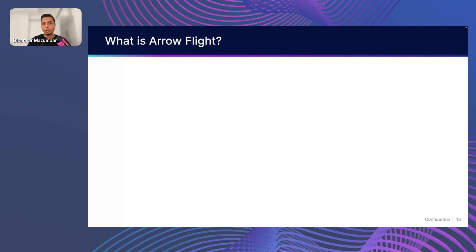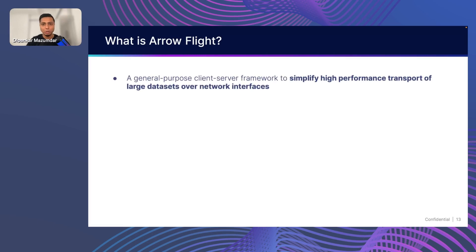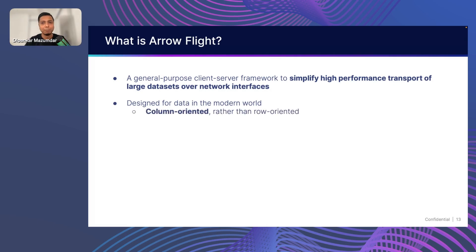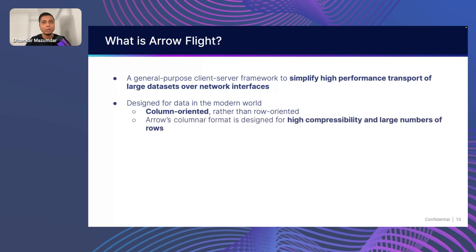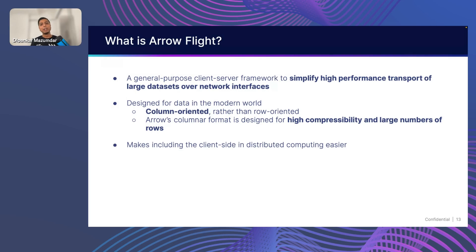So what is Arrow Flight? It's a general client-server framework designed to simplify high-performance transport of large data over network interfaces. It's really designed for data in the modern world — data in the columnar standard, not just on disk, but even when it's in memory and processing, results sent back to your client are often columnar. At a minimum, you can take advantage of the columnar benefits of data transfer. It's column-oriented, with high compressibility and designed for large numbers of rows — two things that are really good for efficient data transfer.